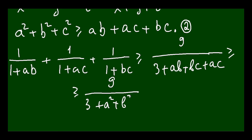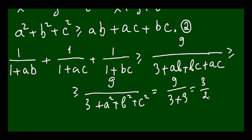Since a² + b² + c² is given as 3, this becomes 9 over (3 + 3), which equals 3 over 2.